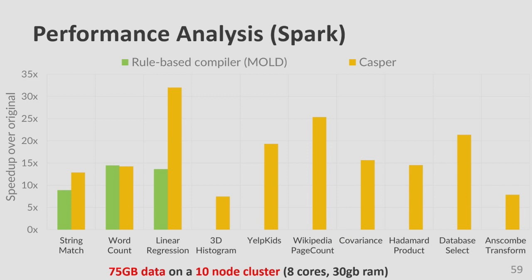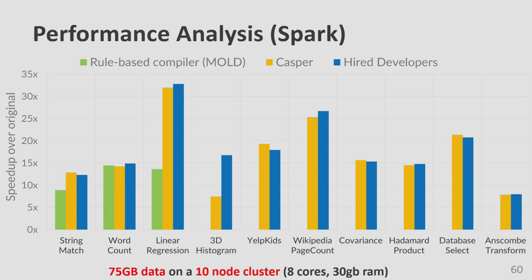We first compared Casper against a rule-based compiler called Mold. Casper can translate far more benchmarks than the rule-based compiler, and even for benchmarks Mold can compile, Casper finds more efficient implementations. More interesting is the comparison against humans — we hired online developers through a freelancing platform to manually rewrite these applications. In most cases, the performance was extremely competitive. A few cases like the 3D histogram had the manual developer exploit domain-specific knowledge to optimize better than Casper could.